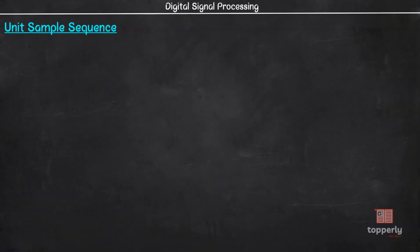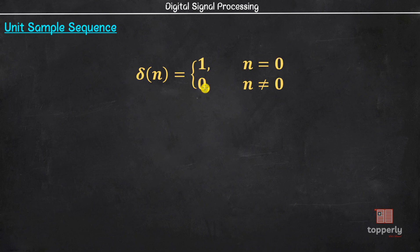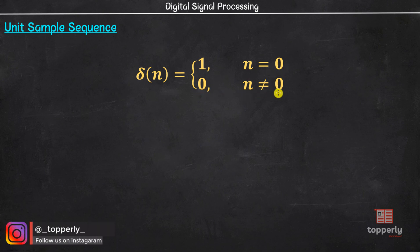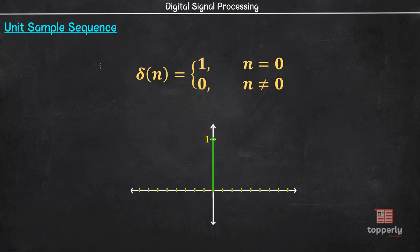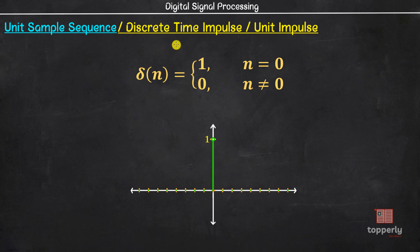The unit sample sequence is one of the most useful and simplest sequences and is denoted by δ(n). It is defined as δ(n) = 1 for n = 0, and δ(n) = 0 for n ≠ 0. Here is how it is graphically represented. This sequence is also called a discrete-time impulse, or simply the unit impulse.